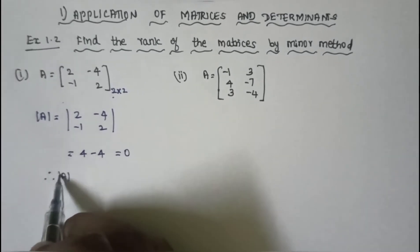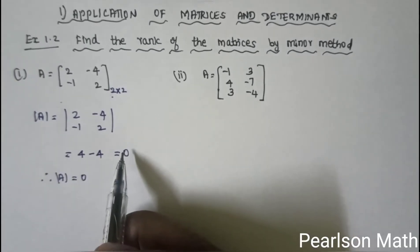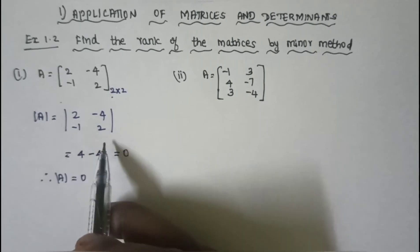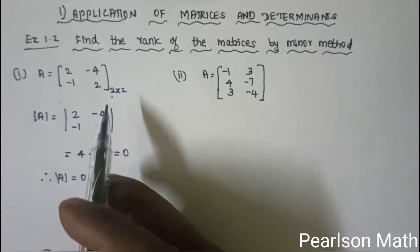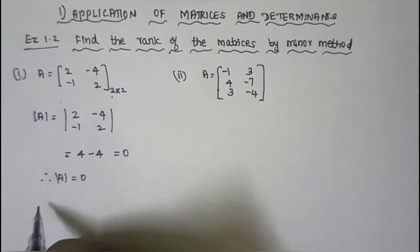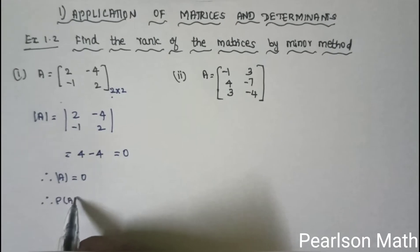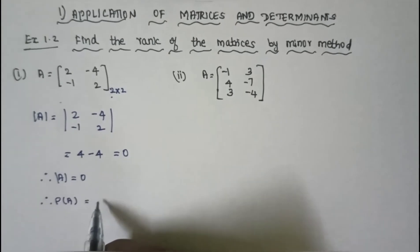Therefore, the determinant of A is equal to 0. Since the 2×2 determinant is 0, therefore rank of A is 1.